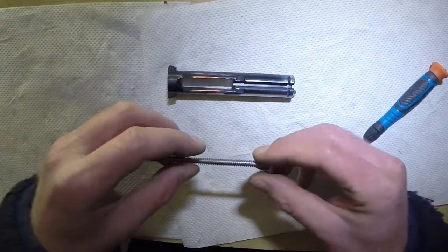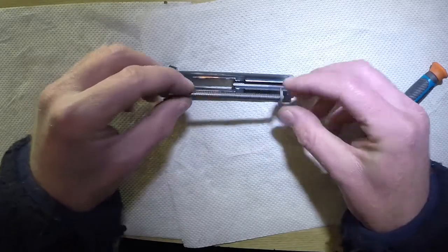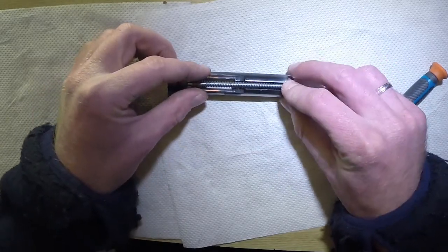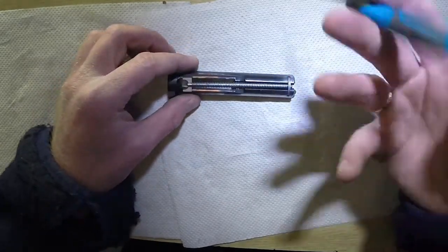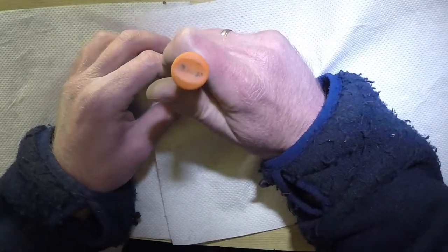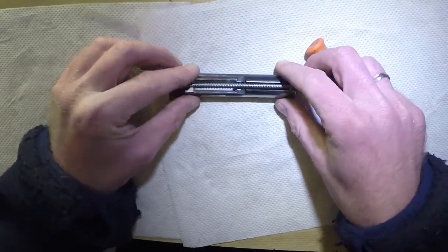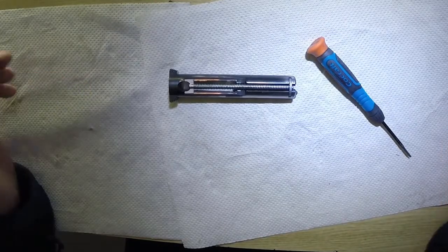Then we're going to put the recoil spring assembly on. Begin at the front, put it into its slot. Use something to pull back on the spring to get everything into place, and then that's it.